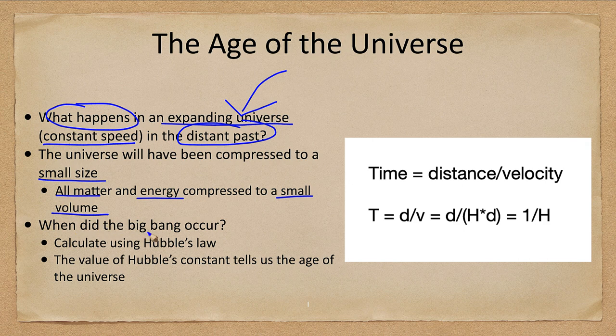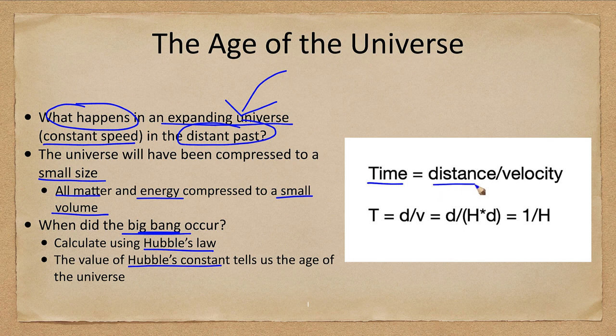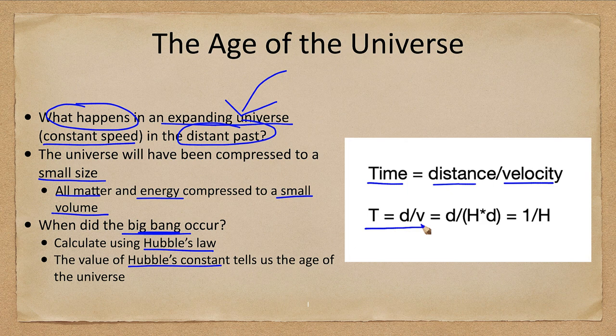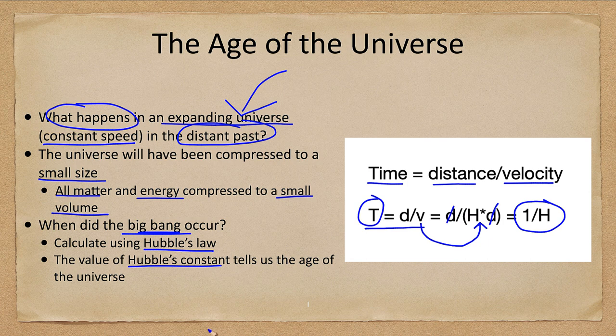So the Big Bang, when did this occur? We can calculate it based on these assumptions using Hubble's law. Hubble's constant is going to tell us the age of the universe. Time equals distance divided by velocity. We know from previous lectures that the velocity is just Hubble's constant times the distance, the distances will cancel, meaning that the time or age of the universe is just one divided by Hubble's constant.